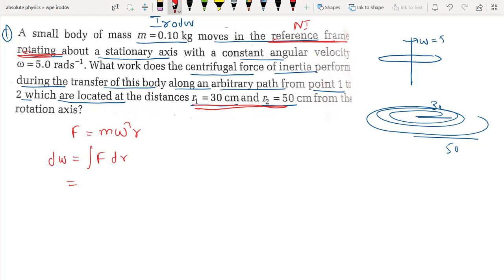And F is equal to m omega square r into dr. Now m is constant, omega is constant. So we have to find work done.